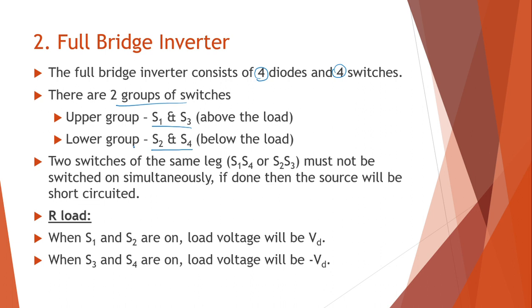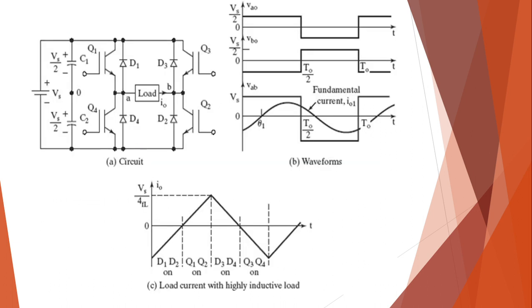I will just move on to the circuit. You can see that the upper switches are Q1 and Q3, and the lower switches are Q2 and Q4.